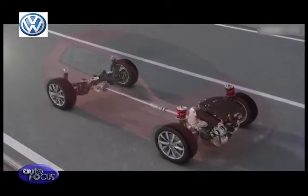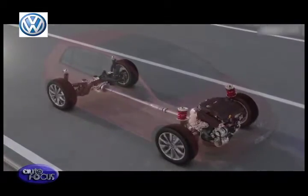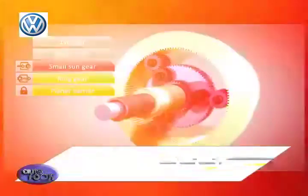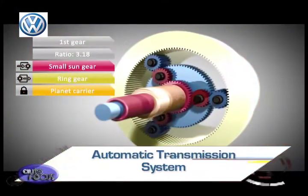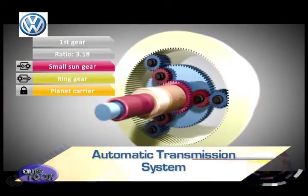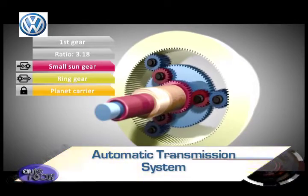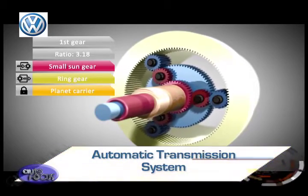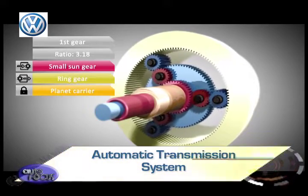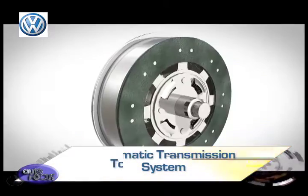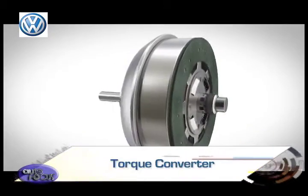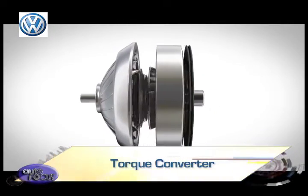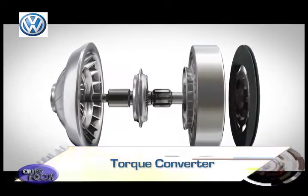The main difference between a manual and an automatic transmission is that the automatic uses the same set of gears to produce all the different gear ratios using the planetary gear set. It relies on a torque converter to decouple the engine and the gear set instead of a clutch.